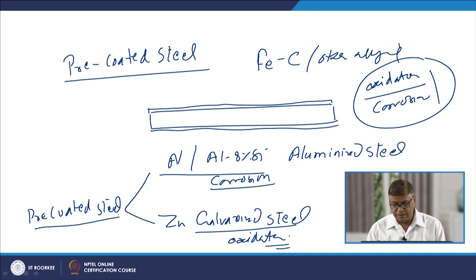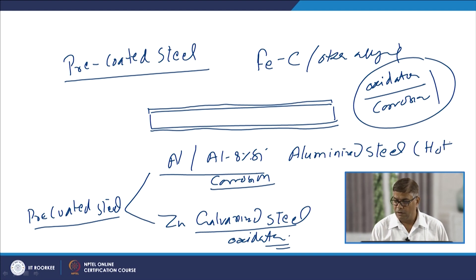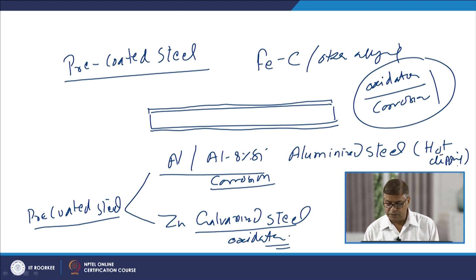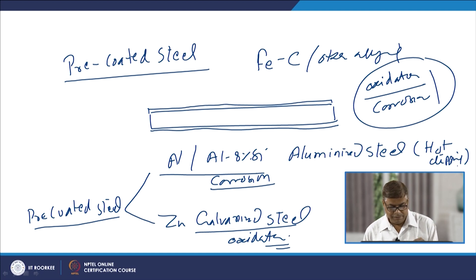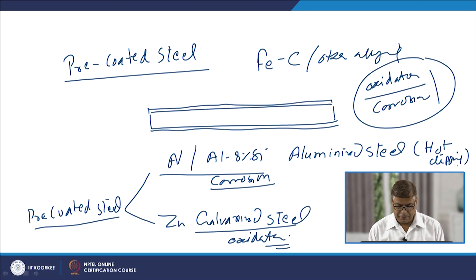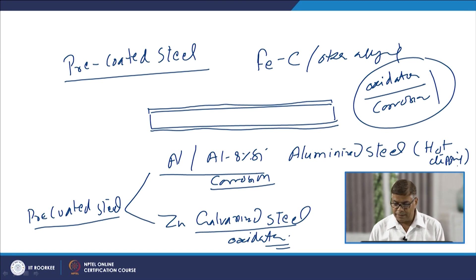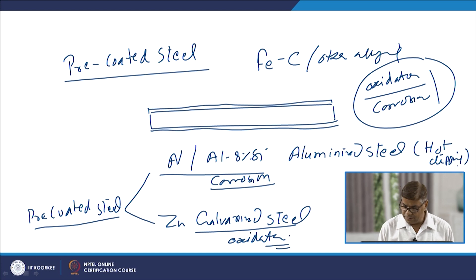There are different methods of applying these coatings, but the most commonly used method is hot dipping — the plate, sheet, or component to be coated with either aluminium or zinc is dipped in a molten bath of aluminium or zinc and then taken out to develop the coating. Another method is electroplating. Both electroplating and hot dipping are used for developing galvanized steel or applying zinc coating onto the surface of steel.